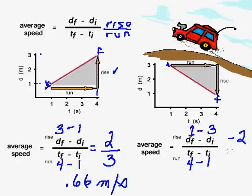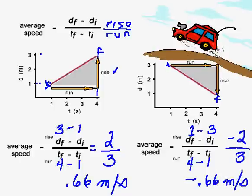And I'm going to divide by the run. Four take away one is three. I have a negative value for this slope, and it's going to be minus 0.66 meters per second.